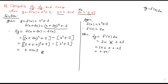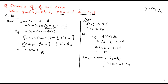Delta y is 0.0401 and dy is 0.04. Now we have to find the error. The error equals delta y minus dy equals 0.0401 minus 0.04, which gives 0.0001.